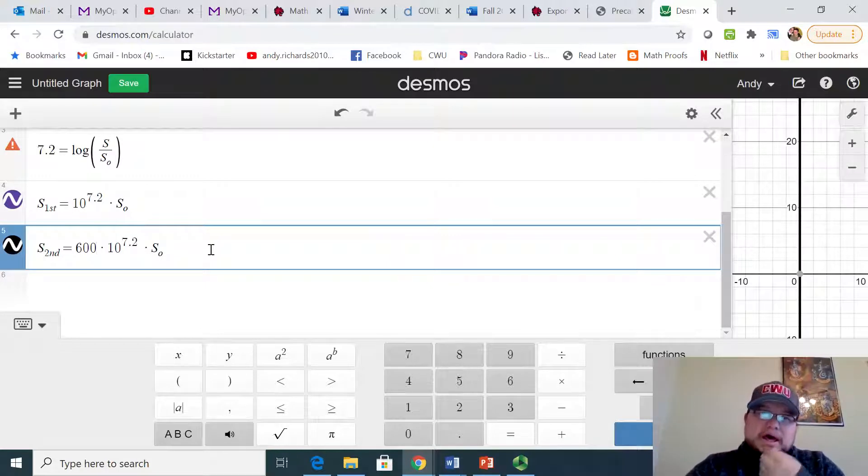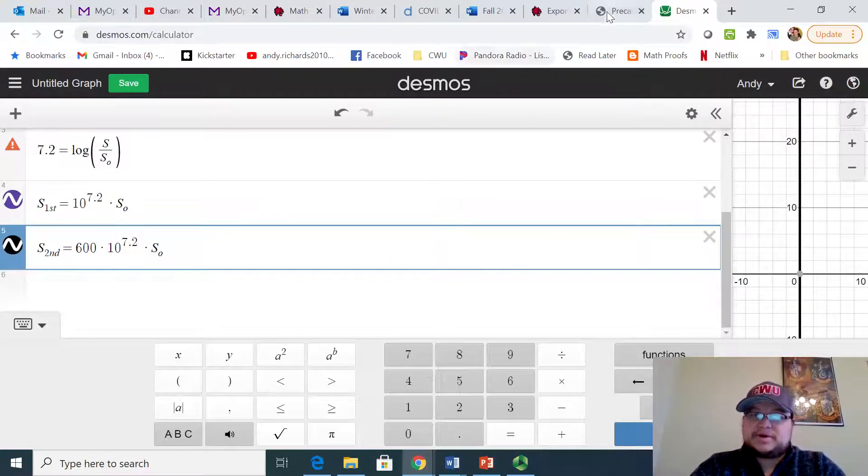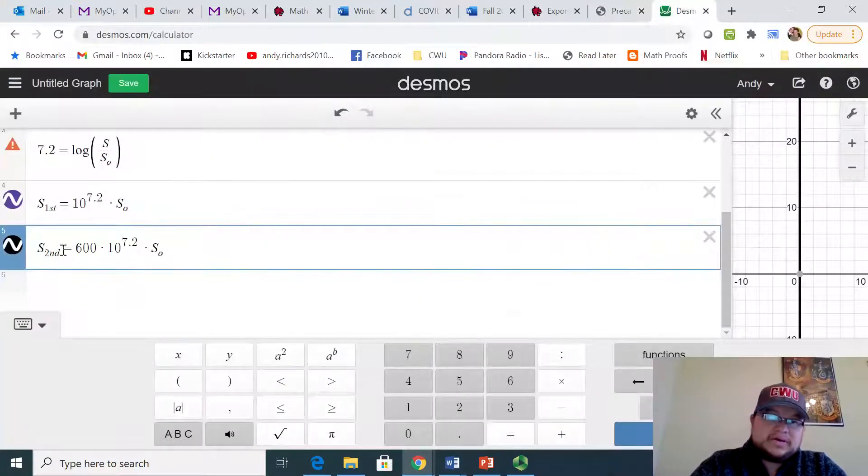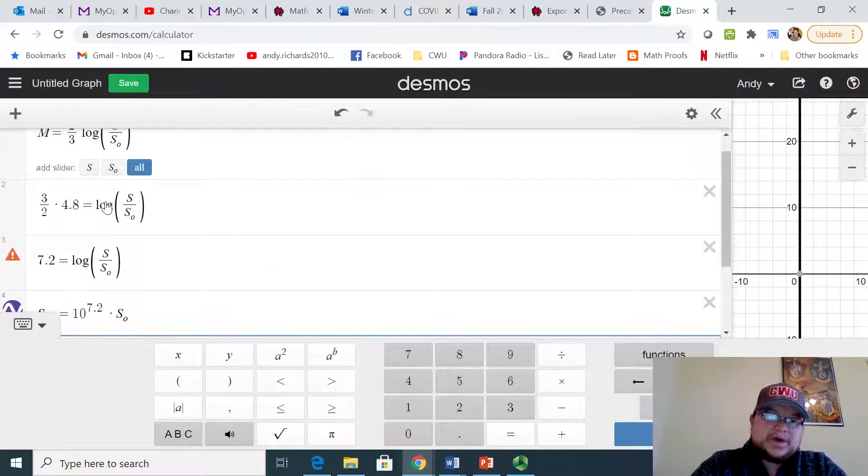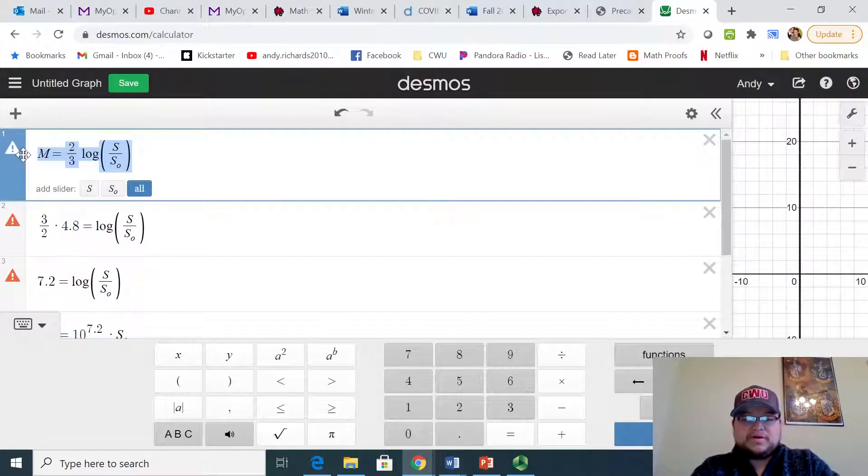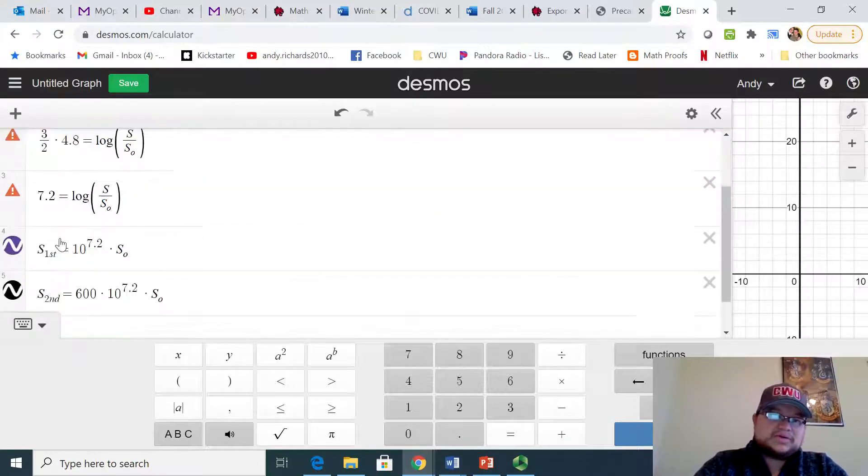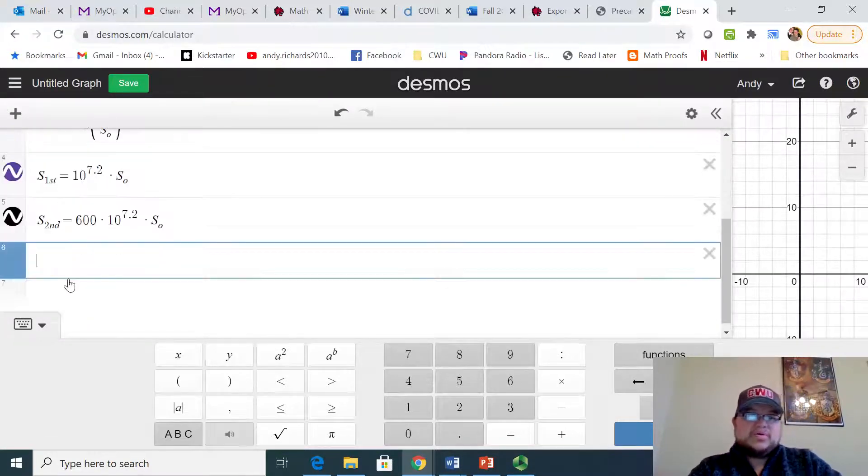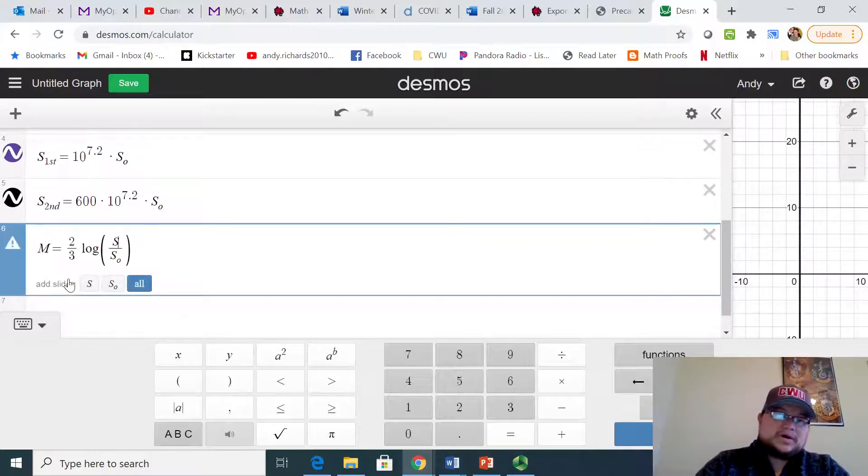So if this is our first, we would take this and multiply it by 600. And this shows the intensity at that point. This is the seismic moment is going to be for it, but this is something that we can plug back into our original function here. We're trying to figure out, well, what is the result where our first one was this 4.8? What happens? What is M when our second earthquake has this intensity?